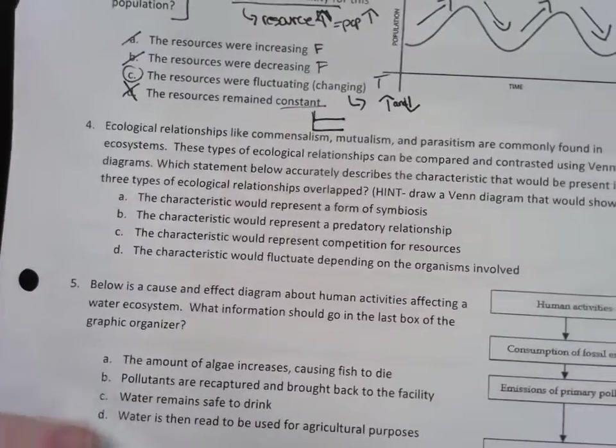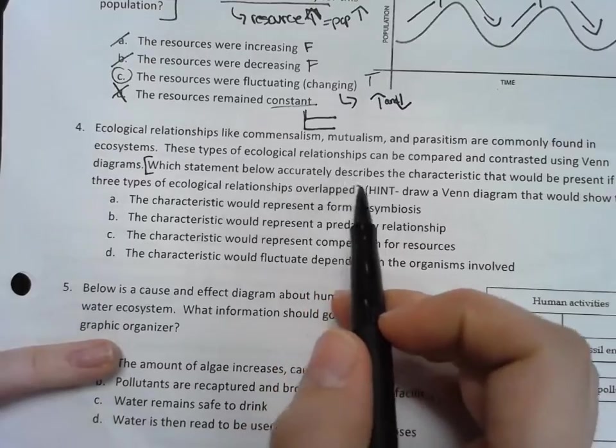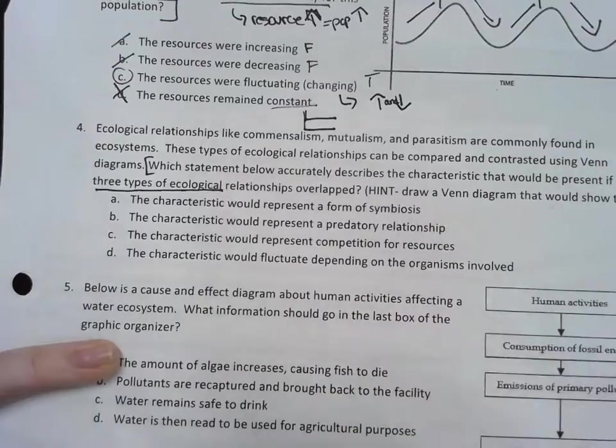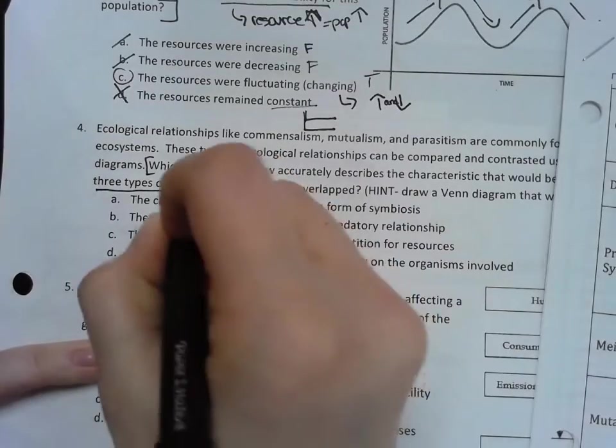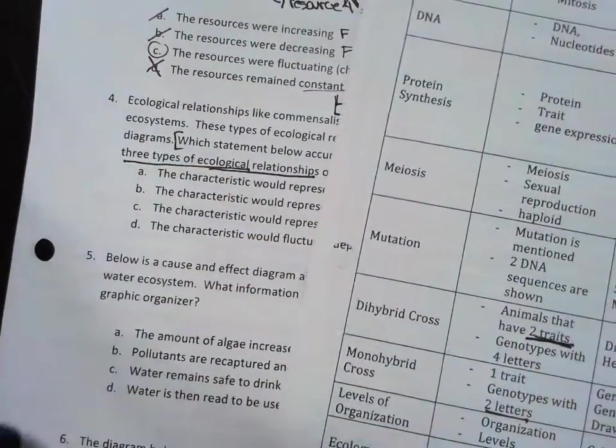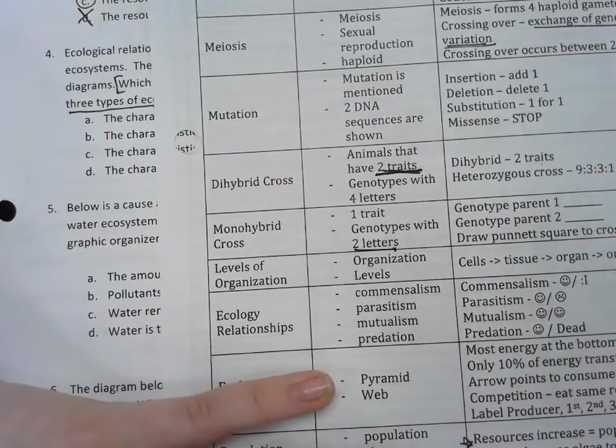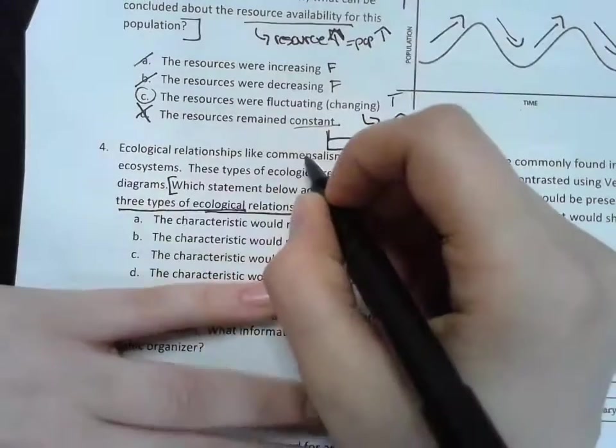Number four was really tricky. So if I bracket my question: which statement below accurately describes the characteristic that would be present if all three types of ecological relationships overlap? So if I'm talking about ecological relationships, if I go to here, I see that there are four of them and here's my annotations for each.